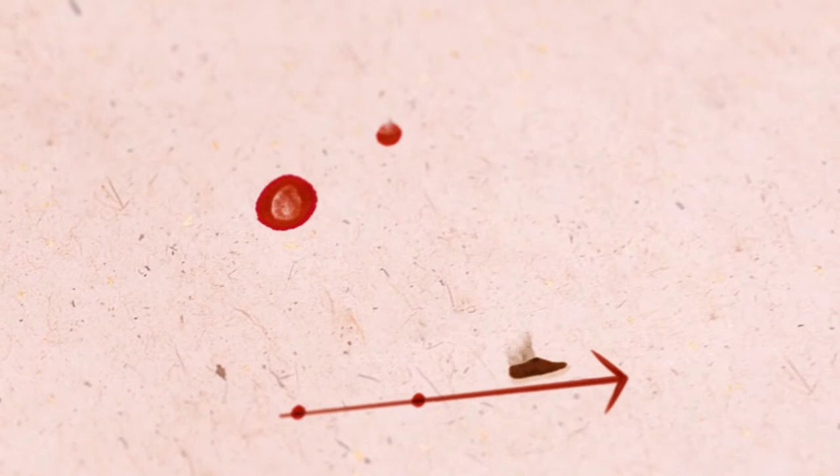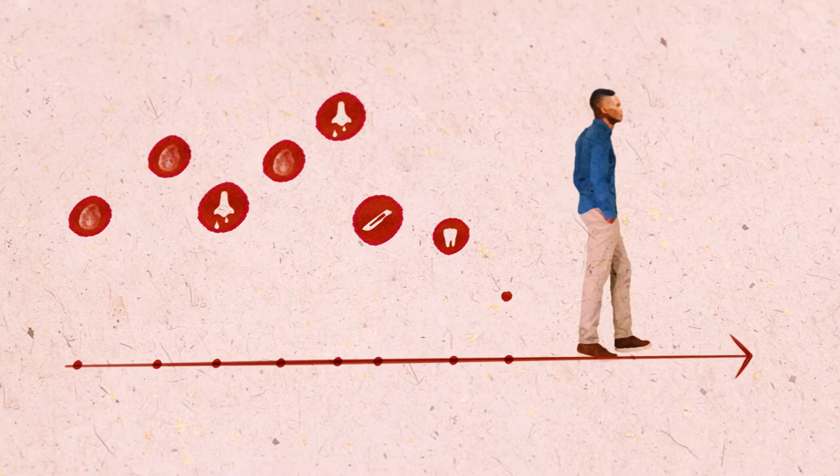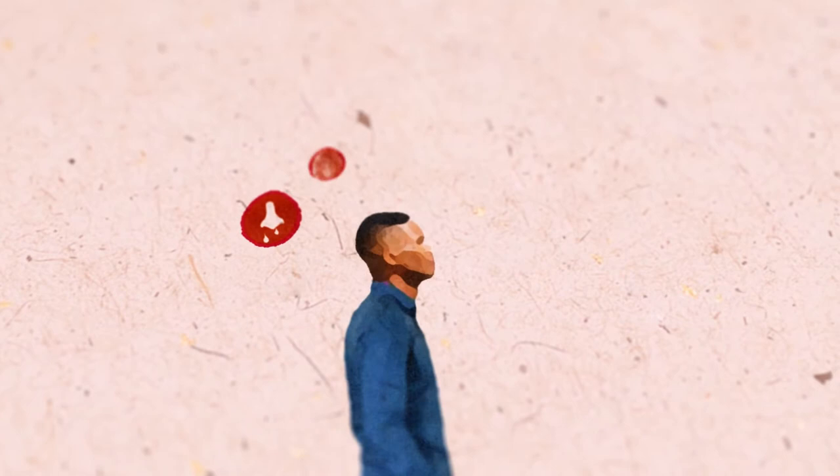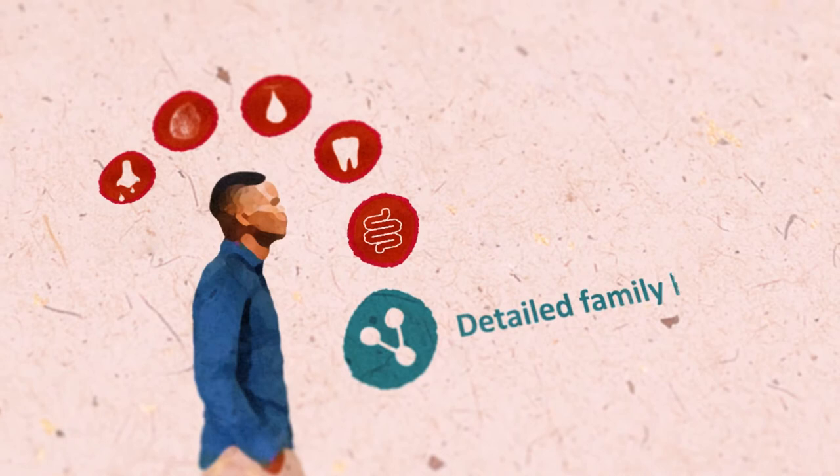The first and crucial step when suspecting Von Willebrand disease is to ensure you are aware of your patient's past experience with bleeding. Allow sufficient time to ask the patient about their personal history of bleeding events and obtain a detailed family history.